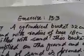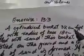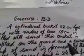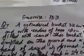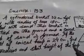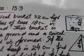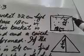A cylindrical bucket 32 centimeters high and with radius of base 18 centimeters is filled with sand. This bucket is emptied on the ground and a conical heap of sand is formed. If the height of the conical heap is 24 centimeters, find the radius and slant height of the heap.